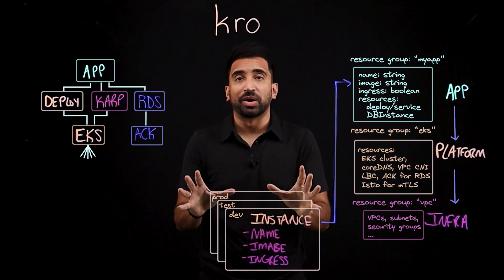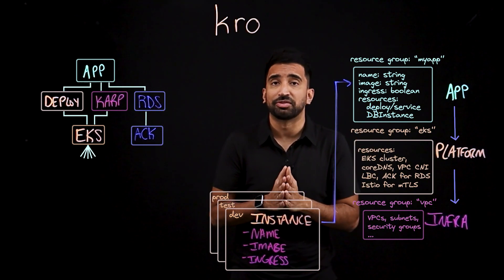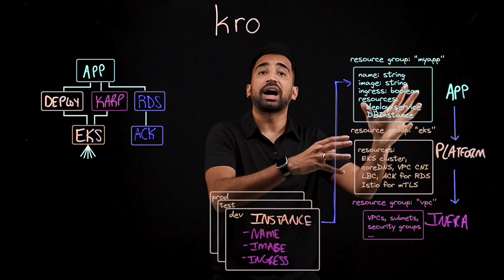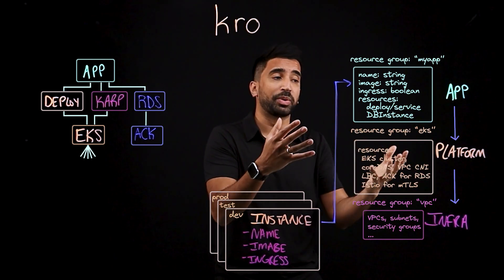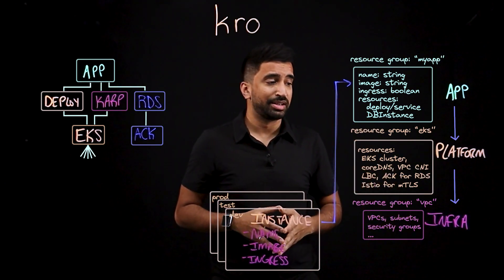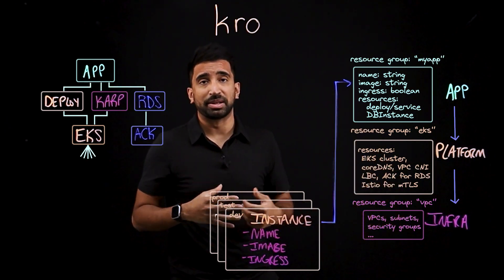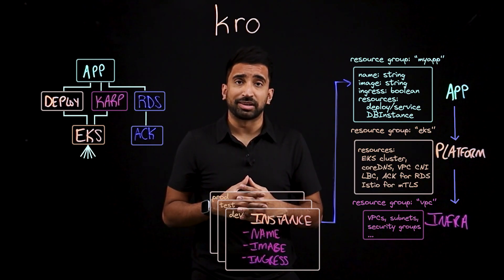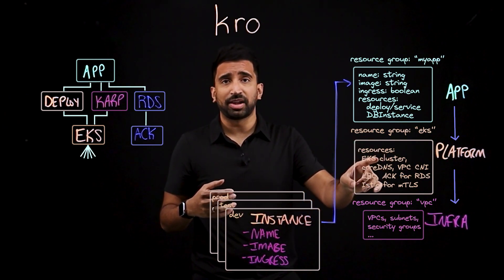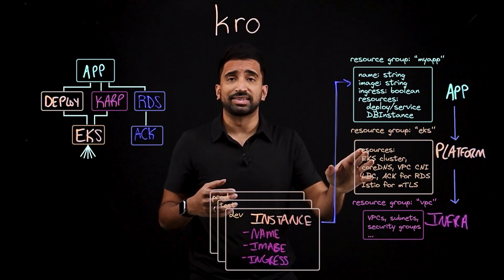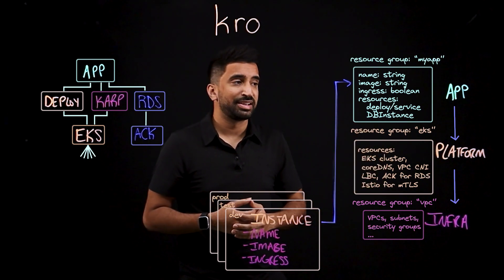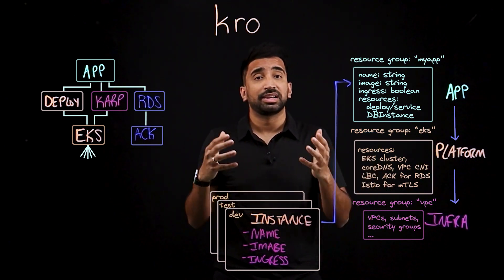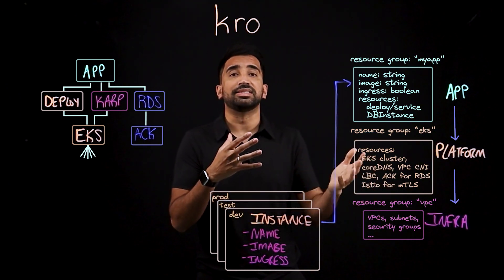Now that we understand how Crow works, let's cover the key advantages and differentiators. Number one: there's intelligent resource dependency handling — by looking at how resources reference each other, it's able to figure out the order in which to deploy the necessary resources. For example, in this stack, the VPC is determined to be the first thing that needs to get deployed. Next, Crow makes it easier for platform teams to implement organizational best practices — hidden from developers' view, Istio with mutual TLS is enabled for all EKS clusters. And lastly, the way we nest these resource groups makes it easier to separate development team and platform team responsibilities, making it easier to work together.